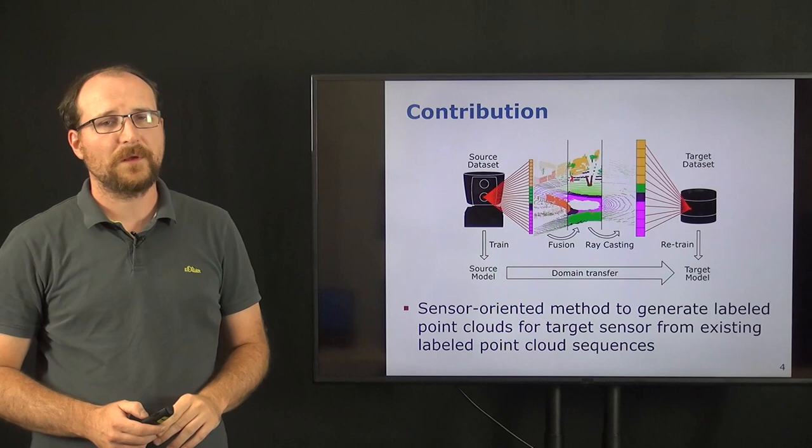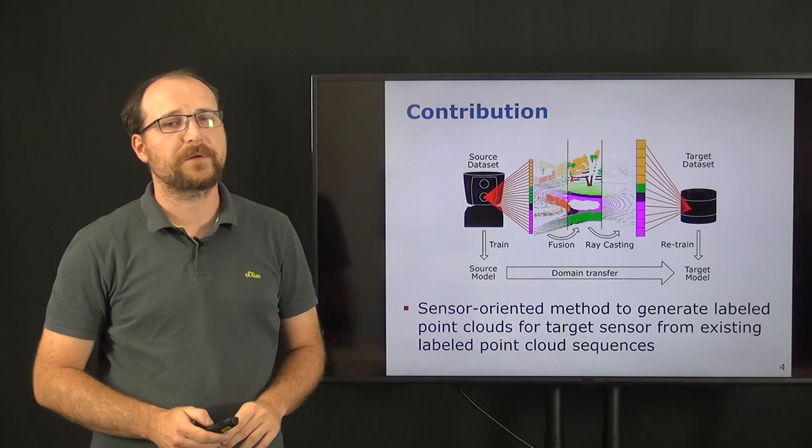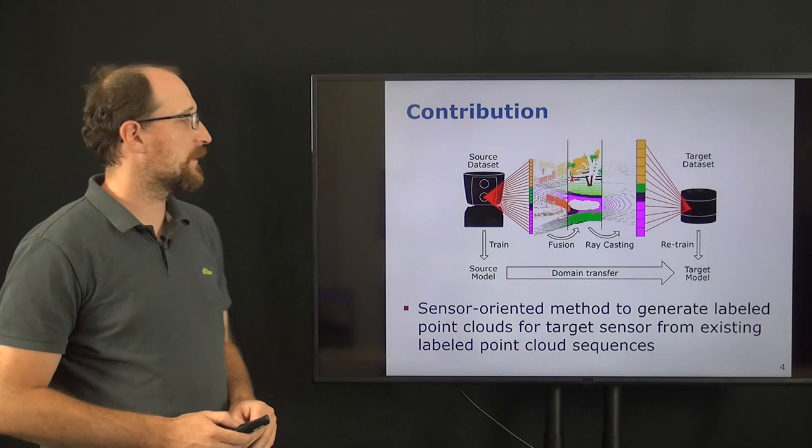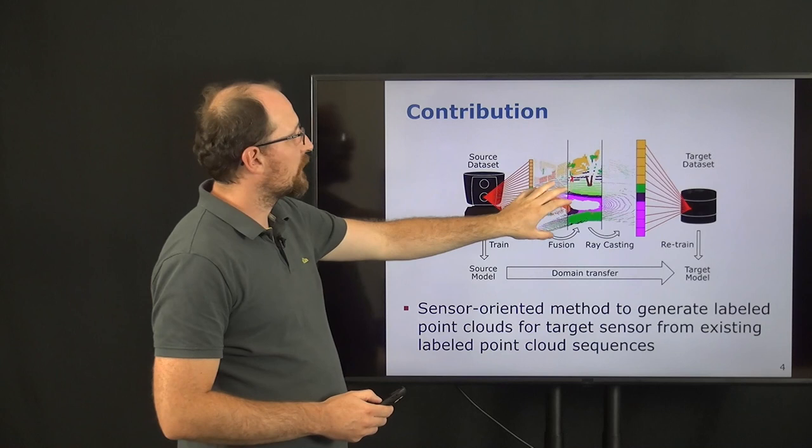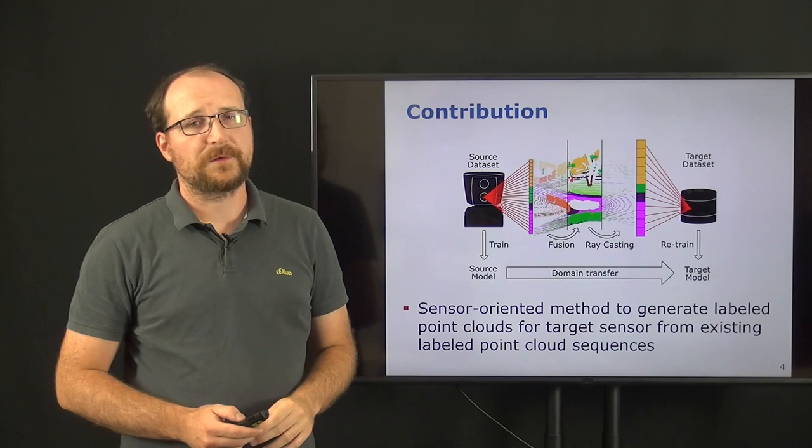To alleviate the problem, we are now proposing a sensor-agnostic method to generate labeled point clouds for a target sensor from existing labeled point cloud sequences. Here the idea is to take an input labeled point cloud dataset, generate a synthetic scan, which we then can use to train a model for the final target dataset.